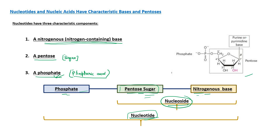In the structure of a nucleotide, the nitrogenous base is attached to the 1-prime carbon of the pentose via an N-beta glycosidic bond. The phosphate group is attached to the 5th carbon (CH₂OH) of the sugar. So the 1-prime carbon bears the nitrogenous base, and the 5th carbon bears the phosphate group.